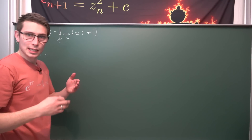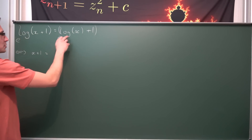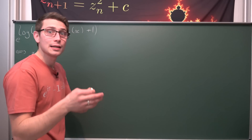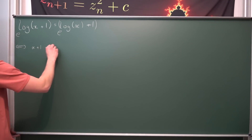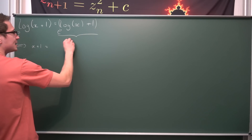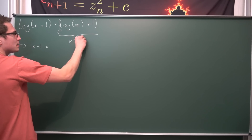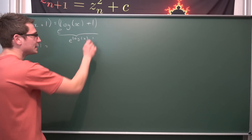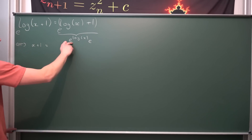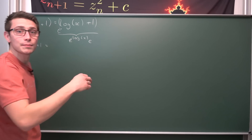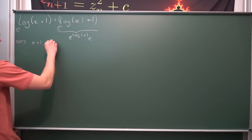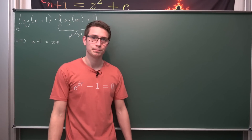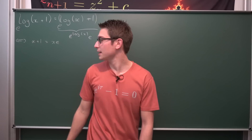Now we need to use the functional equation for the exponential function. e to the a plus b is the same as e to the a times e to the b, meaning this is the same as e to the natural log of x times e to the first power. And we all know that e to the first power is just e, and e to the log of x — e and log cancel out — to give us x. So x times e.